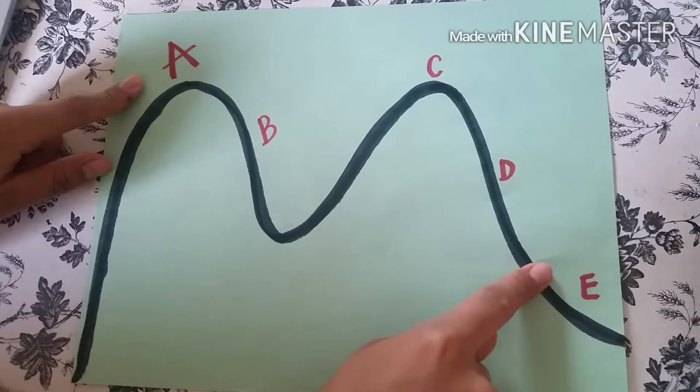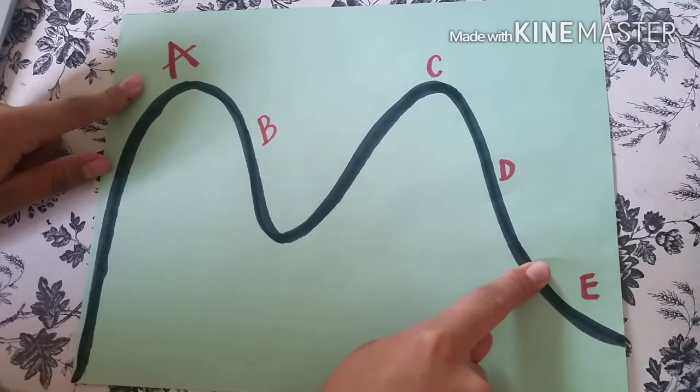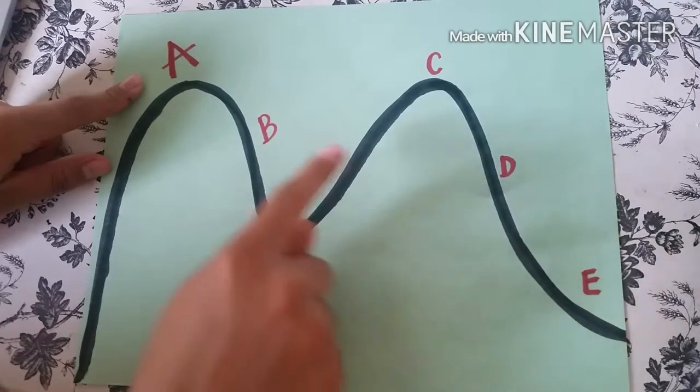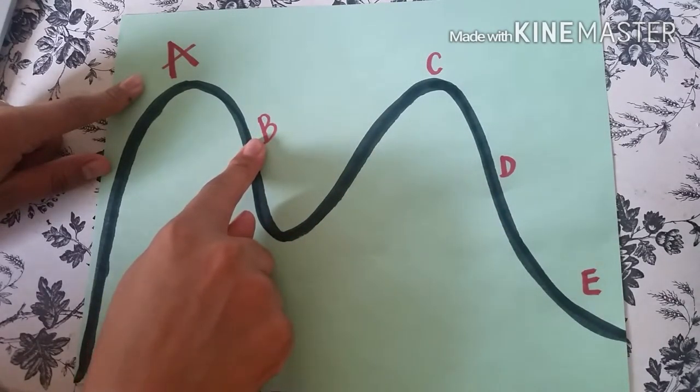Within A and E, one is losing potential energy and gaining kinetic energy. Consider location B to be one fourth of the roller coaster path downward. It has three fourths potential energy and has one fourth kinetic energy.